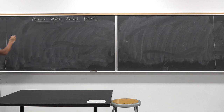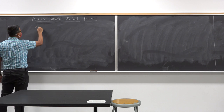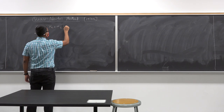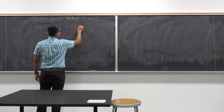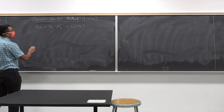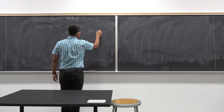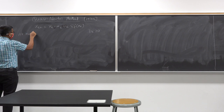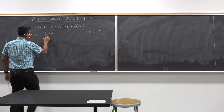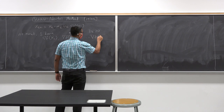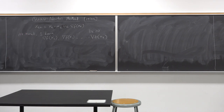Let's write down the gradient descent update: x_{k+1} = x_k - α_k D_k ∇f(x_k), where D_k must be a positive definite matrix. At time k, I have already computed ∇f(x_0), ∇f(x_1), all the way up to ∇f(x_k)—that's something we know.